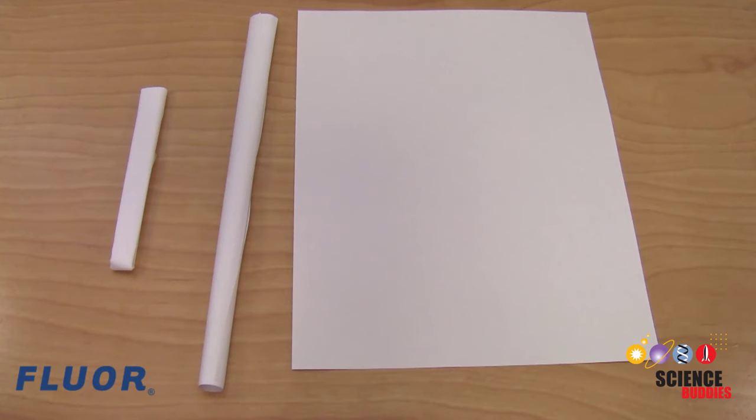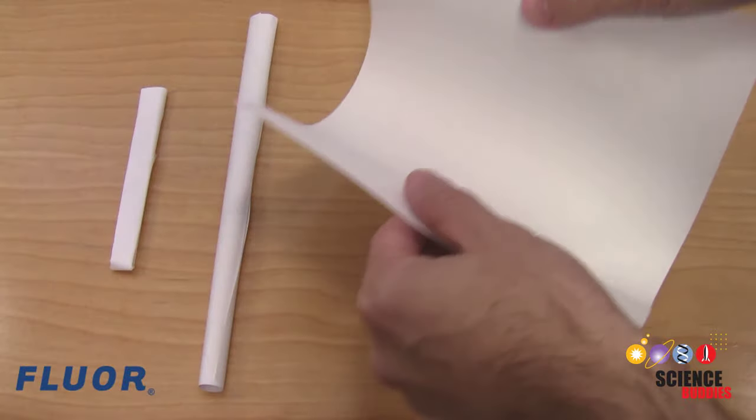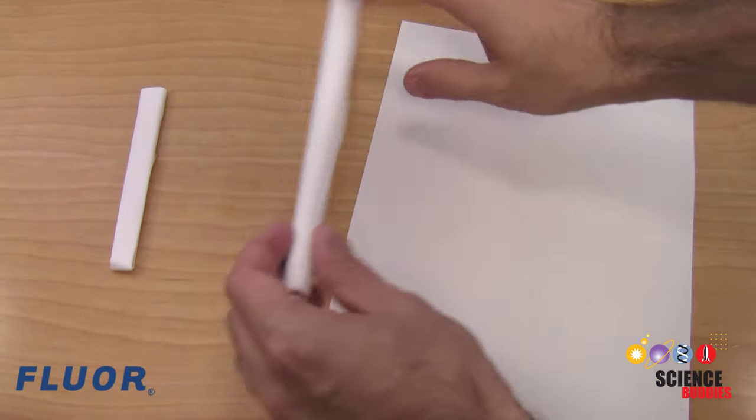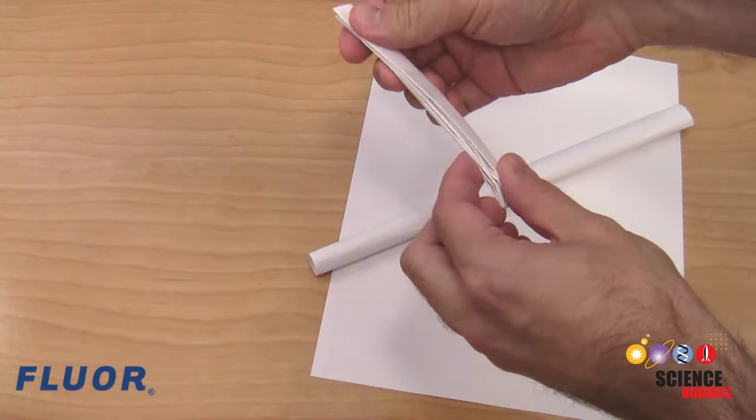Even though you can only use paper and tape, there are many creative ways you can use these simple materials to build a sturdy tower. For example, notice how a flat piece of paper is very easy to bend. However, if you roll the paper into a tube or fold it over multiple times, it becomes much harder to bend.